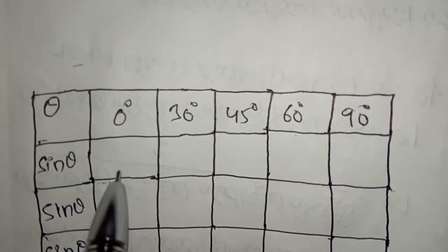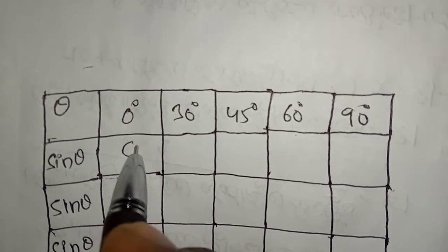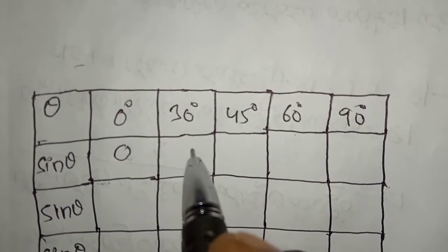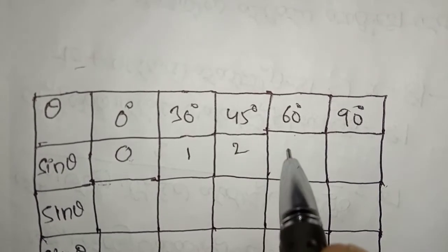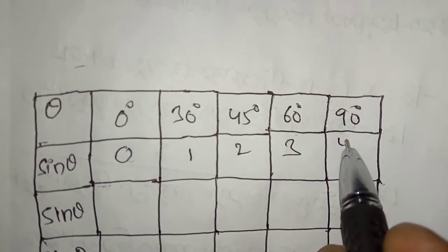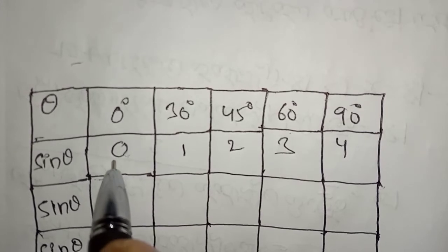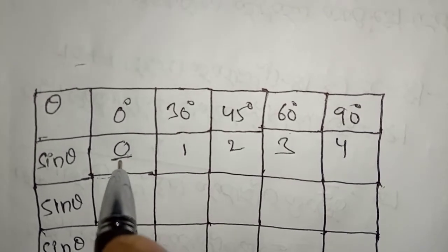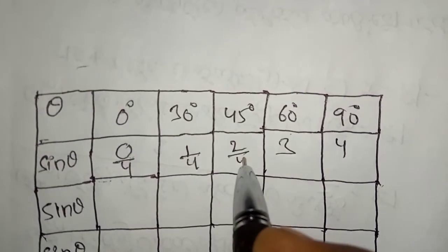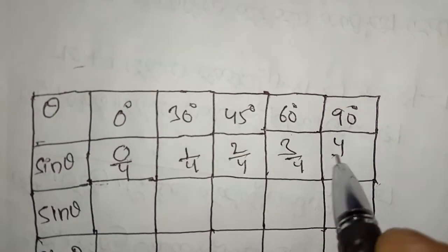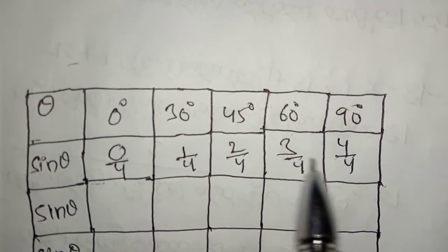Sin theta is 0. The first table is 0, 1, 2, 3, 4. Then divide: 0 by 4, 1 by 4, 2 by 4, 3 by 4, 4 by 4. These are the first sin theta values.